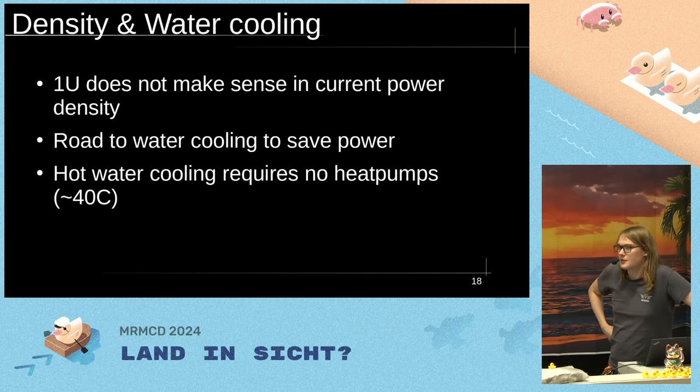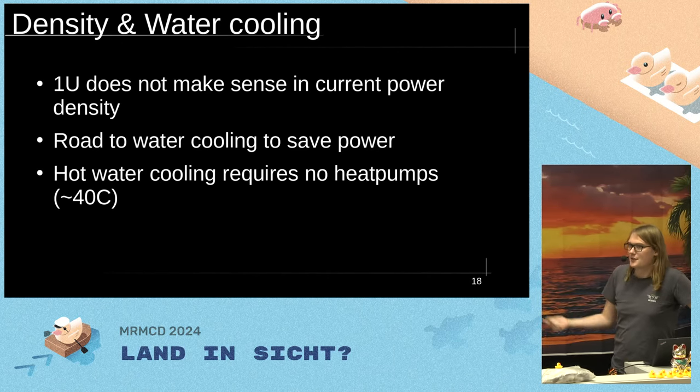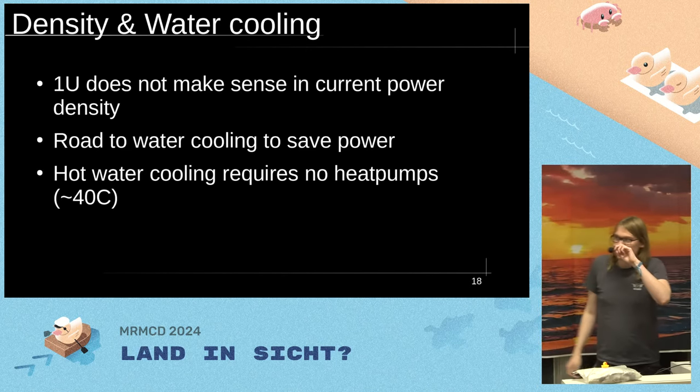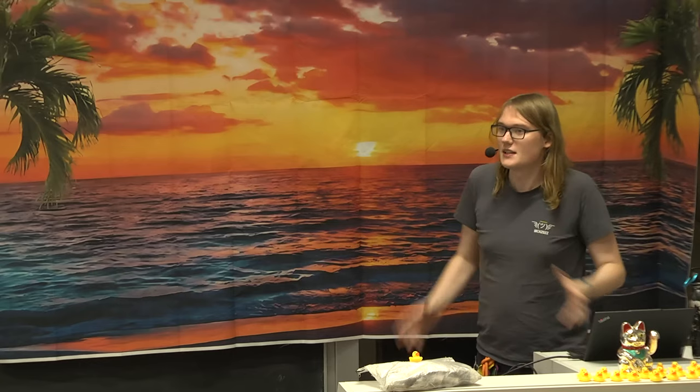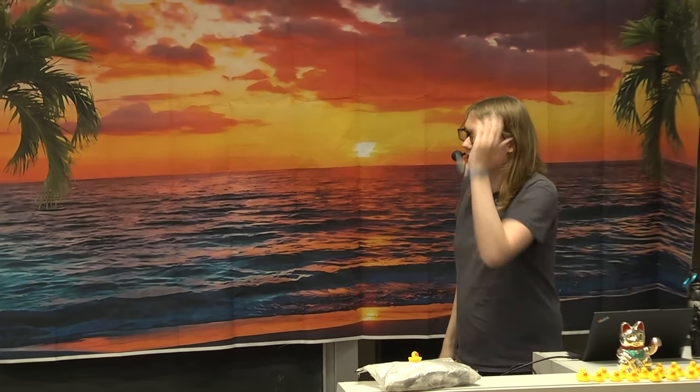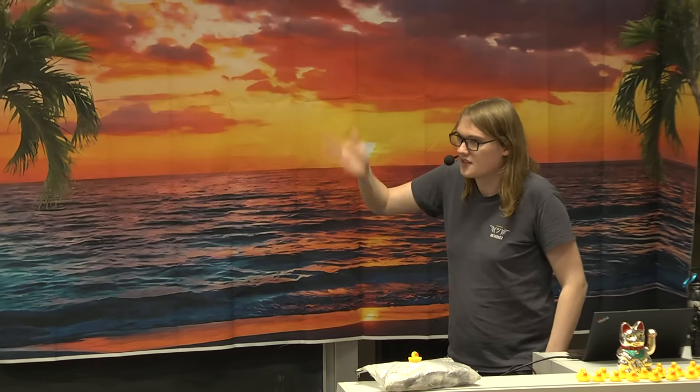The biggest power saving you can make right now is going to water cooling, because you eliminate the fans — that's already 100 to 300 watts saved depending on load. You can even go to hot water cooling, running 40°C water through the servers. Since it's almost never 40°C outside, you can pump the water out to large external radiators, cool it down, and pump it back in. You pump in 40°C water and get 80°C water out — hot enough to use for district heating or other purposes, which is much more useful than getting only 40°C out of 20°C in.